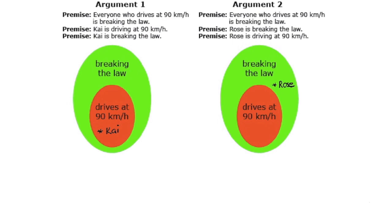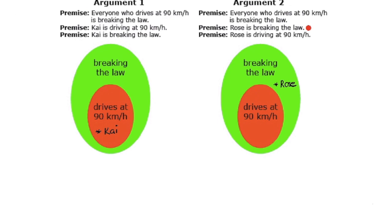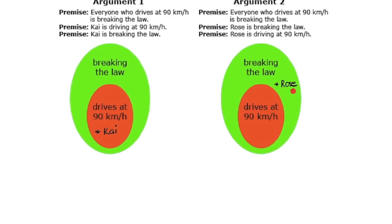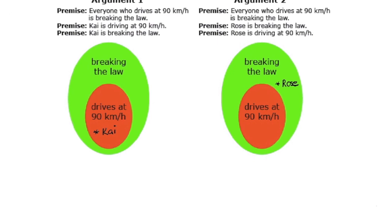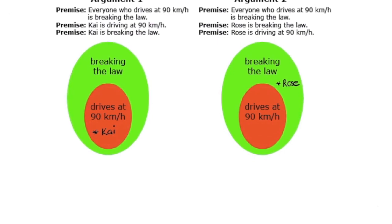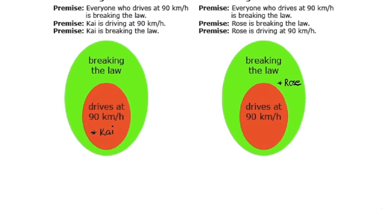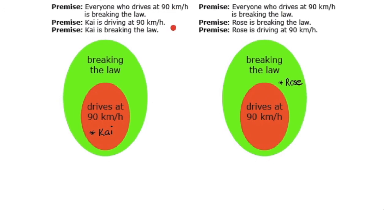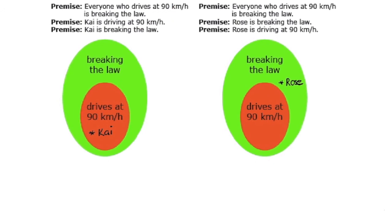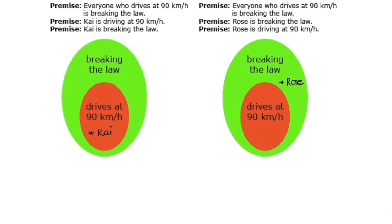In our second argument, we have the same initial premise. Rose, we're told, is breaking the law. So I put Rose into the breaking the law circle and the conclusion that's then drawn is that she's driving at 90 kilometers per hour. But that's not necessarily true because there could be other things Rose is doing where she's breaking the law and she's not necessarily speeding. So if we take these premises in argument one to be true, then our final conclusion would be a valid argument. In the second one, our final conclusion would not be valid.